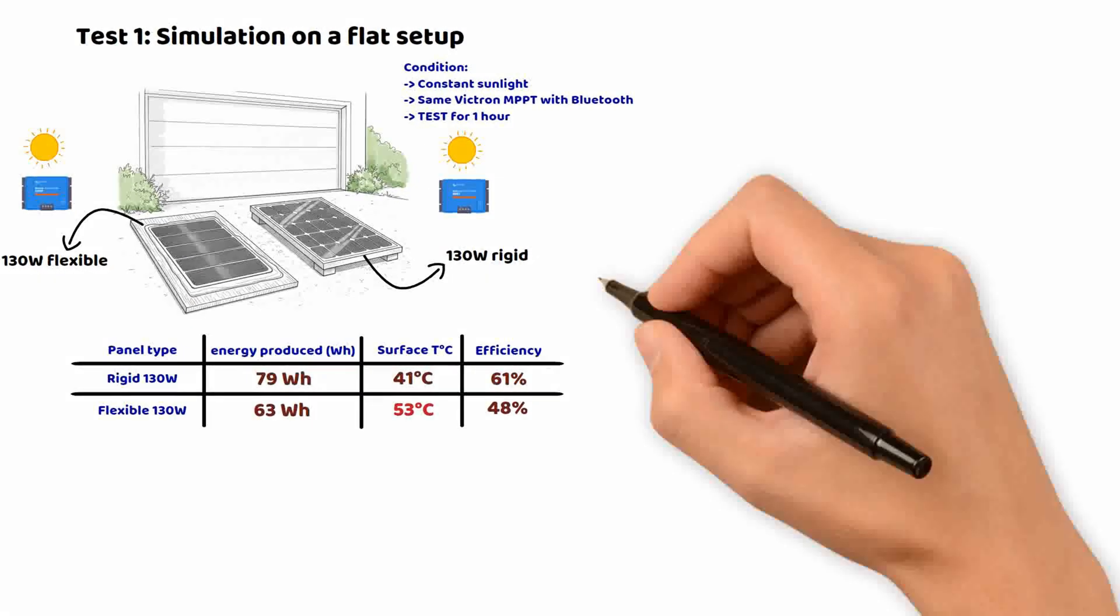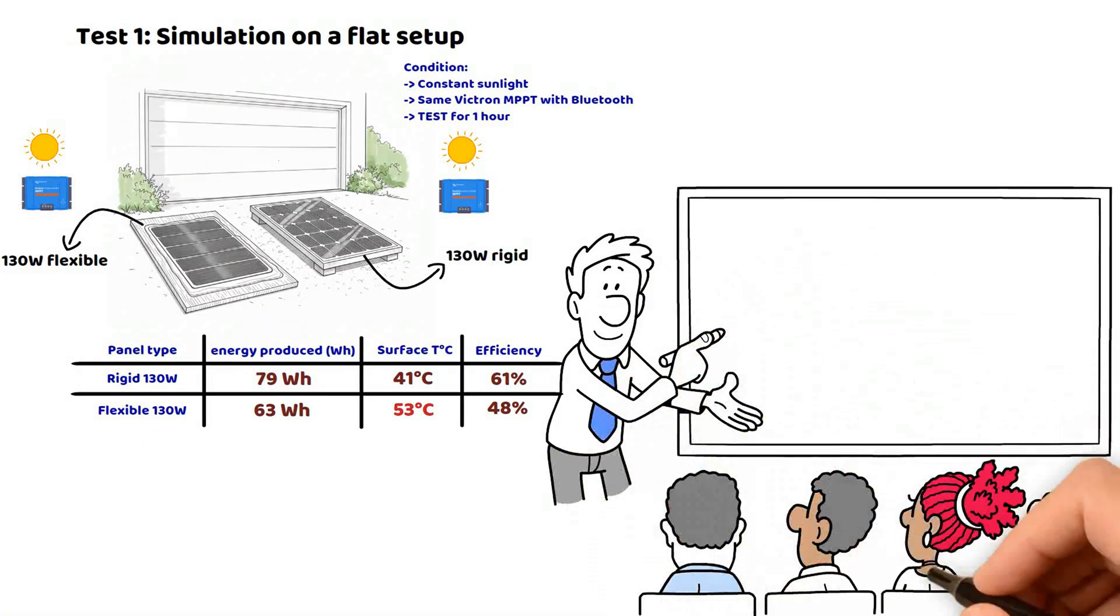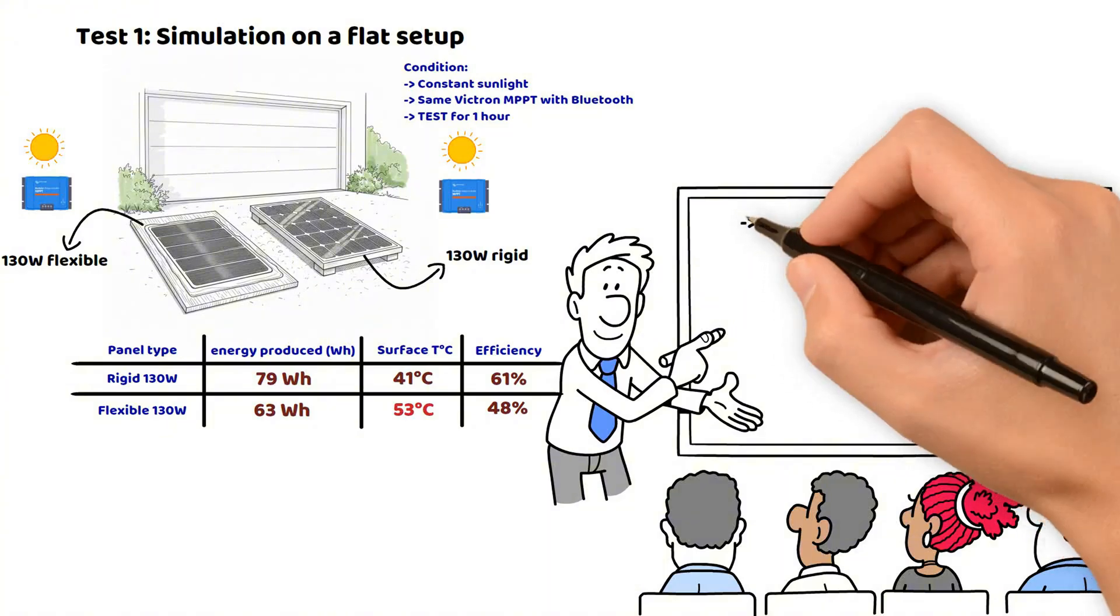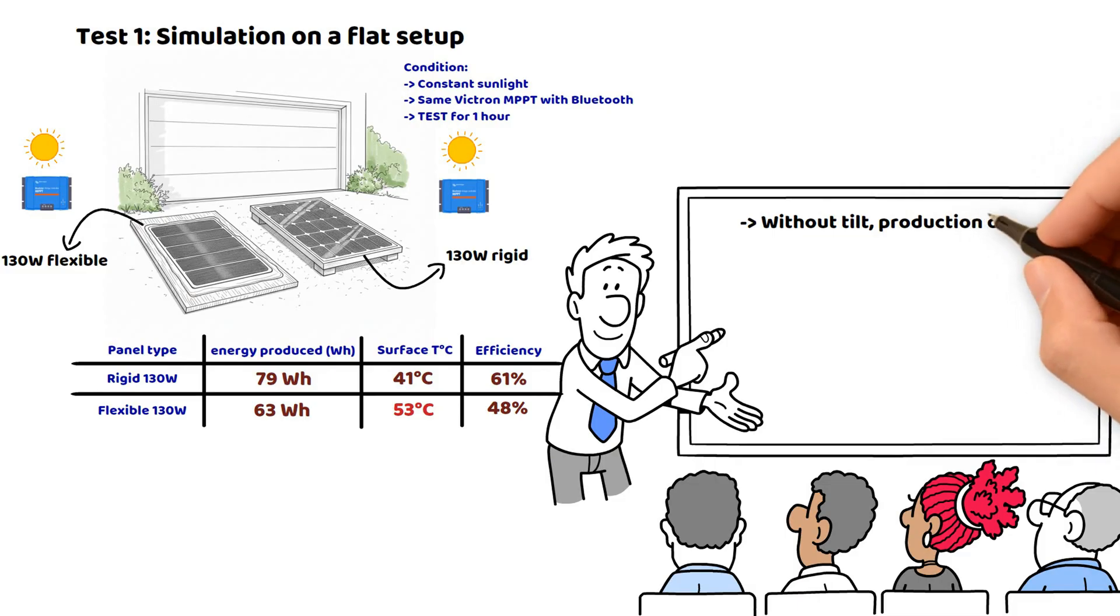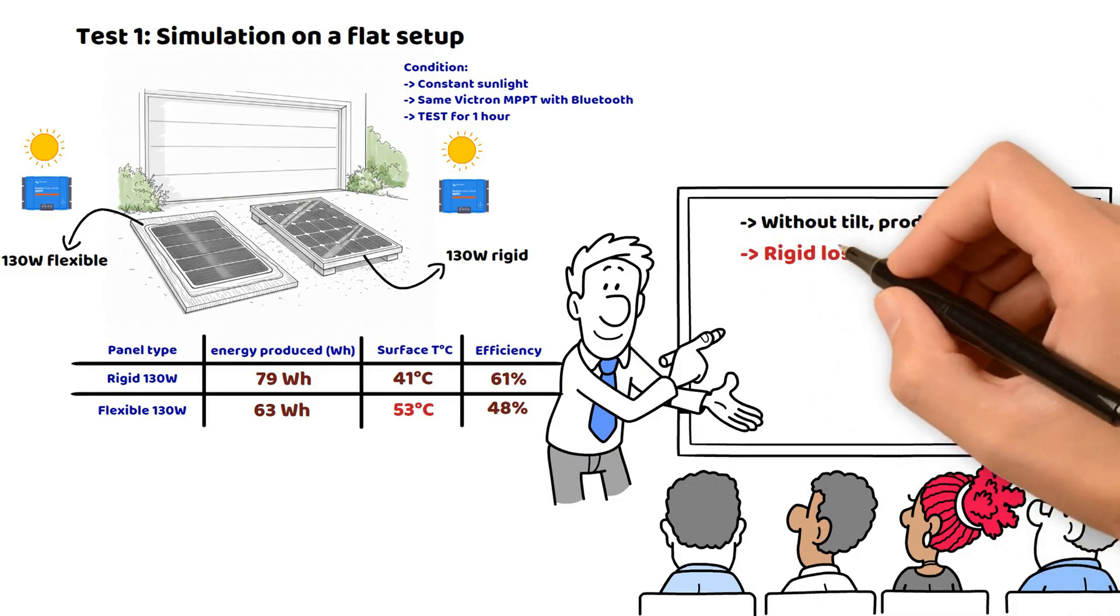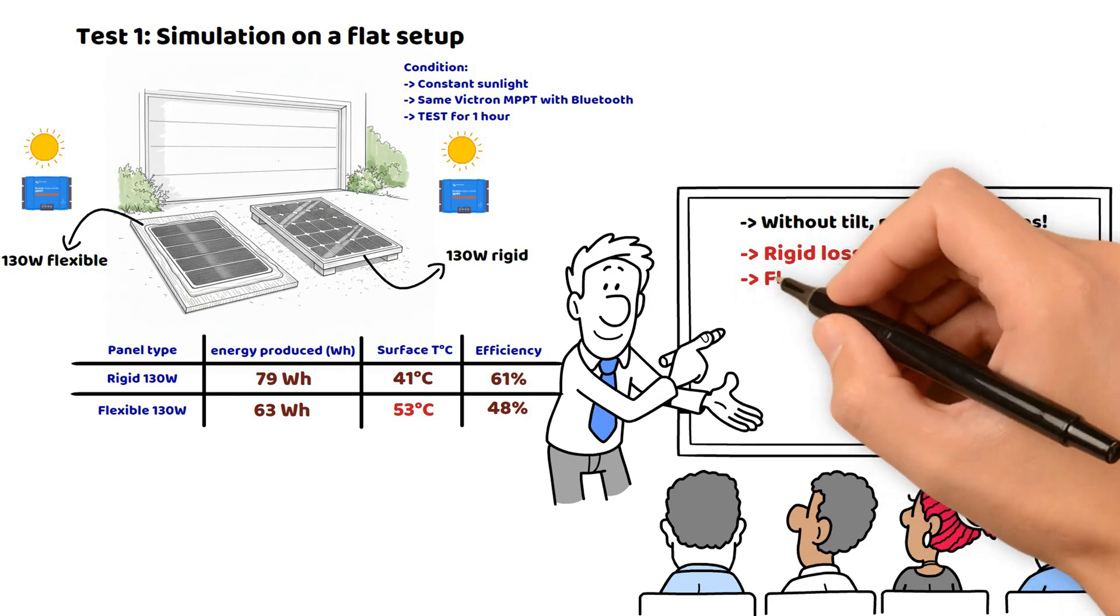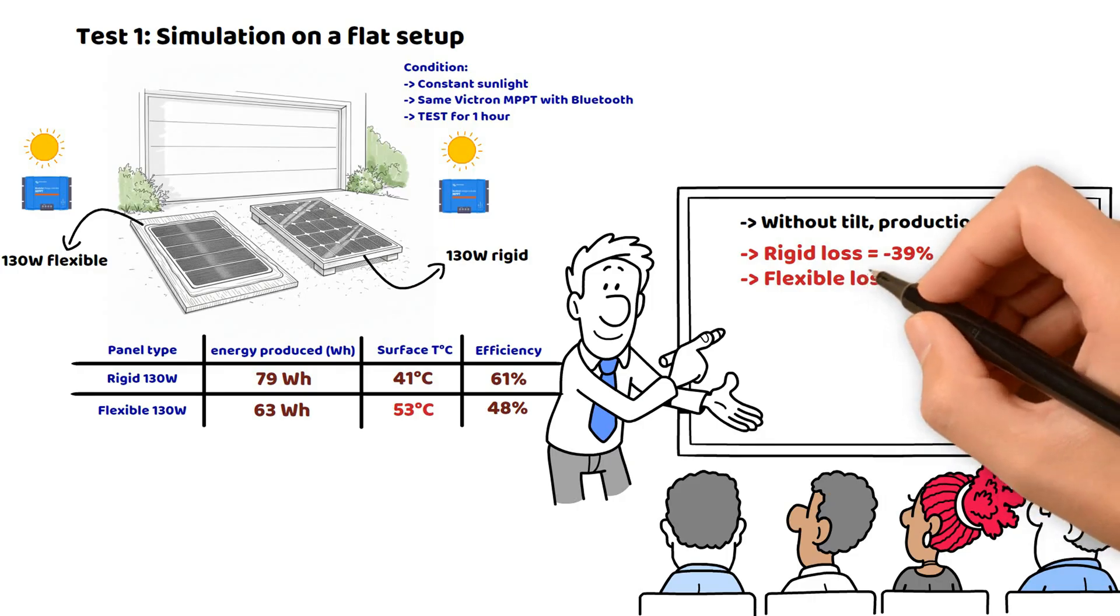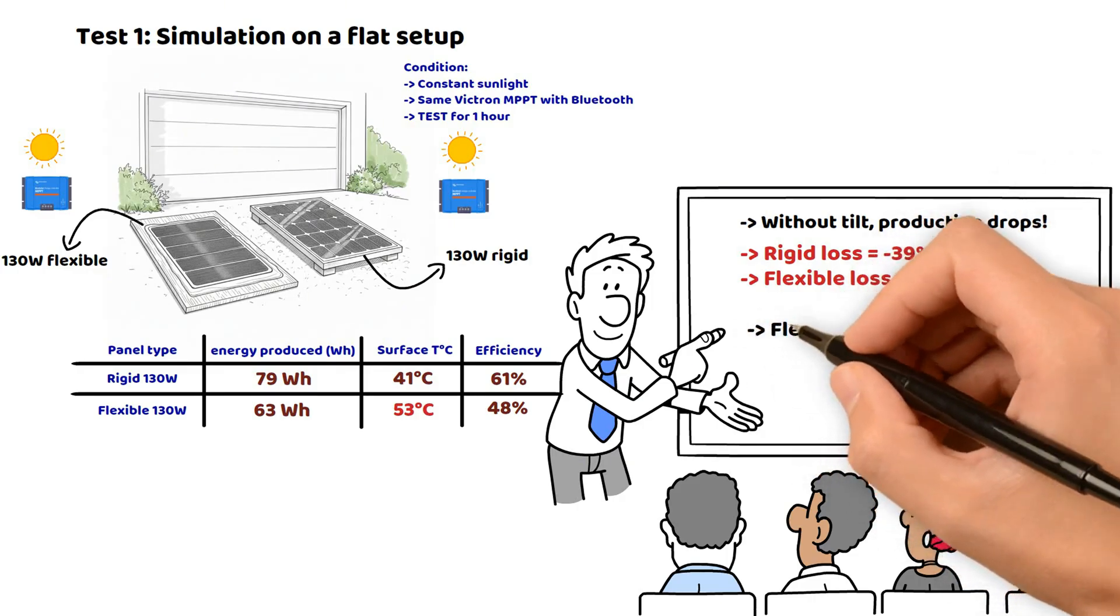So what can we conclude from this simple test? The rigid panel, even when flat, reaches 61% of its theoretical capacity of 130 watts. This shows that in real non-optimal conditions, with no tilt, you naturally lose part of the production. The flexible panel, on the other hand, only reaches 48% of its capacity. The difference is explained by overheating, due to the lack of ventilation. But not only that, if it is in direct contact with the roof, can you imagine?